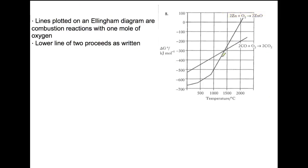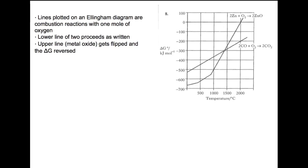There are usually two or more lines shown on an Ellingham diagram. The lower of the two lines at any point on the diagram is the one which would proceed as written. So for example, in this diagram, up until this temperature here, this reaction would proceed as written, whereas after this temperature it would switch to be this reaction. The upper line would get flipped over and the delta G value for the line gets reversed.